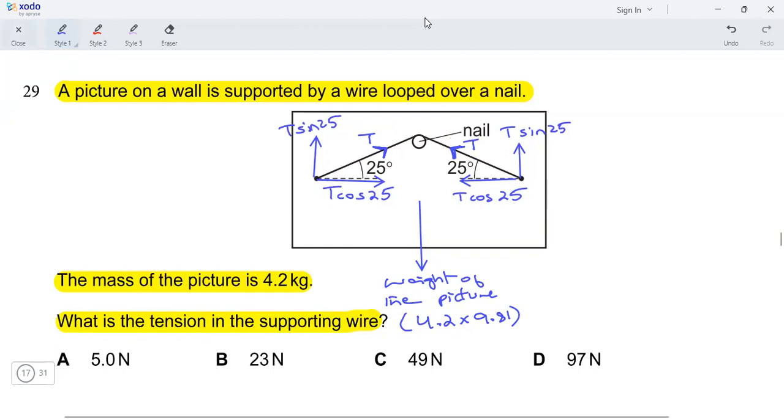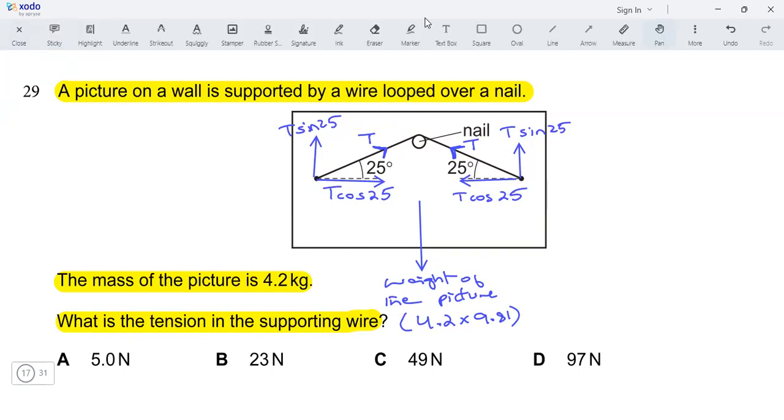Okay, now the pitcher, this entire setup is in equilibrium. Why? Because the pitcher is supported like it's hanging on the wall. It's not moving. It's just hanging. It's stationary. That means it's in equilibrium.